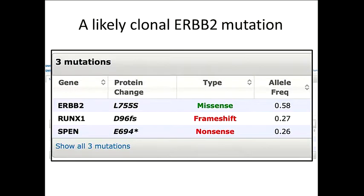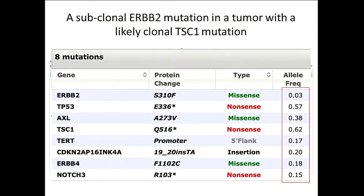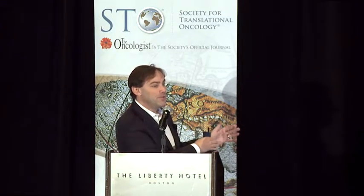Here's a HER2 mutation in a patient with breast cancer with two other mutations. The HER2 mutation is in 58% of alleles while the others are in 27% and 26% — this is probably a clonal mutation with either some copy number gain or a homozygous mutation. But look at this other patient — there's a HER2 mutation in just 3% of the mutant alleles. That could be due to stromal contamination alone. But here's a TSC1 mutation found in 62% of alleles — in all likelihood, this is a subclonal HER2 mutation in a tumor where the TSC1 mutation came early and the HER2 mutation came late.